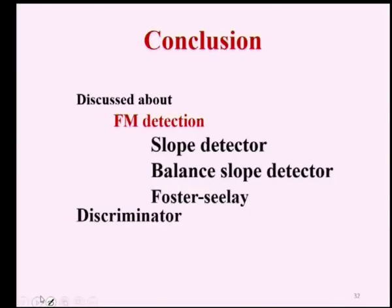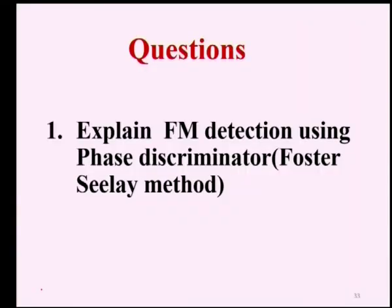In today's session we discussed the slope detector, balanced slope detector, and Foster-Seeley discriminator. In frequency modulation detection, we reconvert the frequency variation into amplitude variation — this reverse process is frequency demodulation. There are four types of frequency detection, and in today's session we covered three. In the next session we will discuss the ratio detector. A simple question from today's class: explain FM detection using the phase discriminator or Foster-Seeley detector. Thank you.